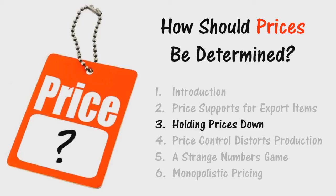Let us say it begins with bread, milk, and other necessities. The first thing that happens — assuming the government can enforce its decrees — is that the profit margin in producing necessities falls or is eliminated for marginal producers, while the profit margin in producing luxuries is unchanged or goes higher. This reduces and discourages the production of the controlled necessities and relatively encourages the increased production of luxuries — exactly the opposite result from what the price controllers had in mind.